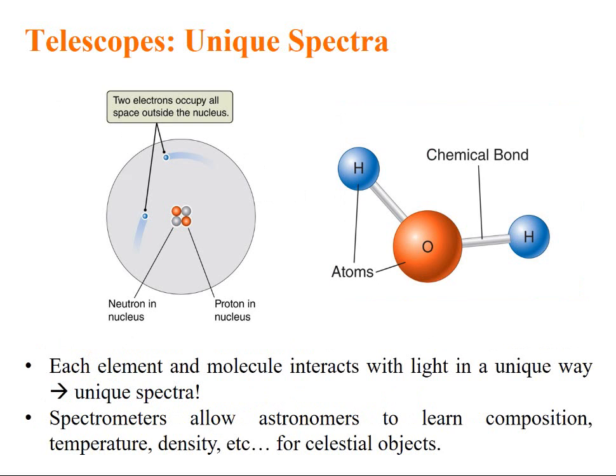Let us talk about the image which is obtained from this CCD sensors. Each element and molecule interact with light in a unique way. So, definitely a unique spectra is obtained for each and every light. Spectrometers allow astronomer to learn the composition, temperature, density, etc. of the celestial body through spectrographs.